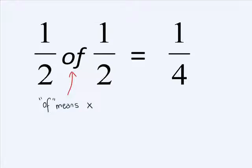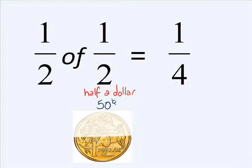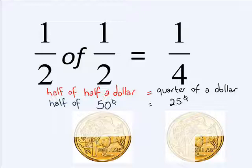Another way of thinking about this, a half times a half, is a half of a half. A half of a half is a quarter. Another way of writing 'of' in maths is by writing 'times'. You might think about this as half of a half a dollar. Half a dollar is 50 cents, half of that is 25 cents, so half of a half a dollar is one quarter of a dollar.